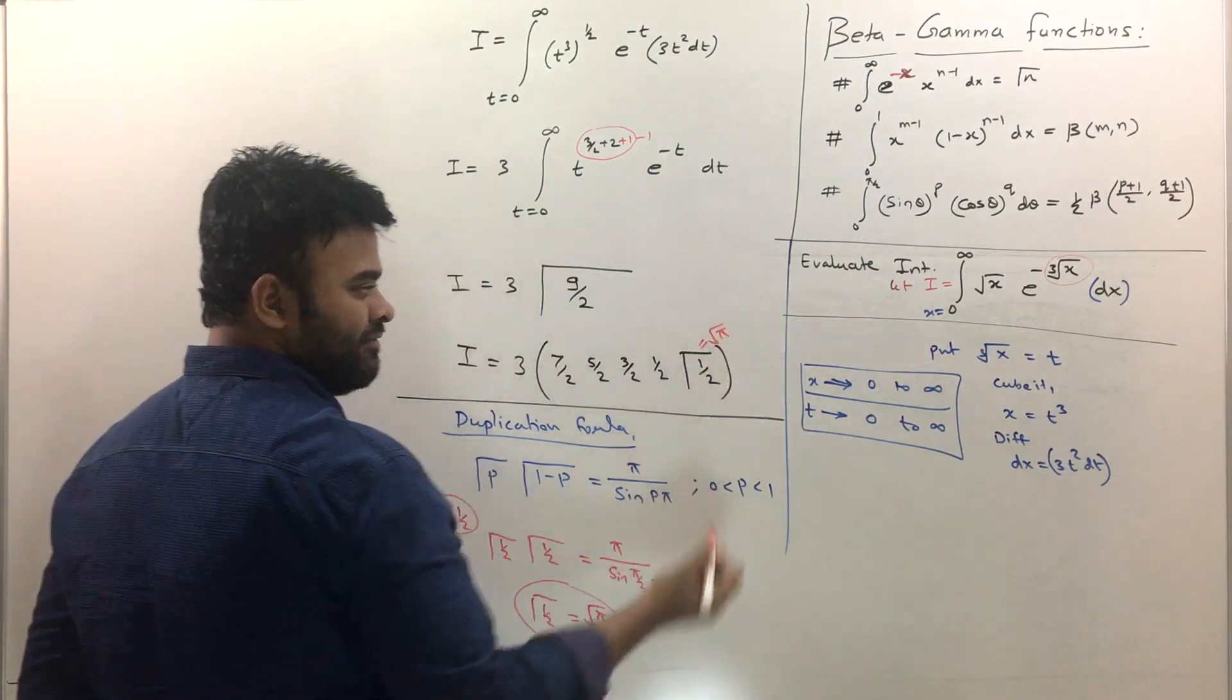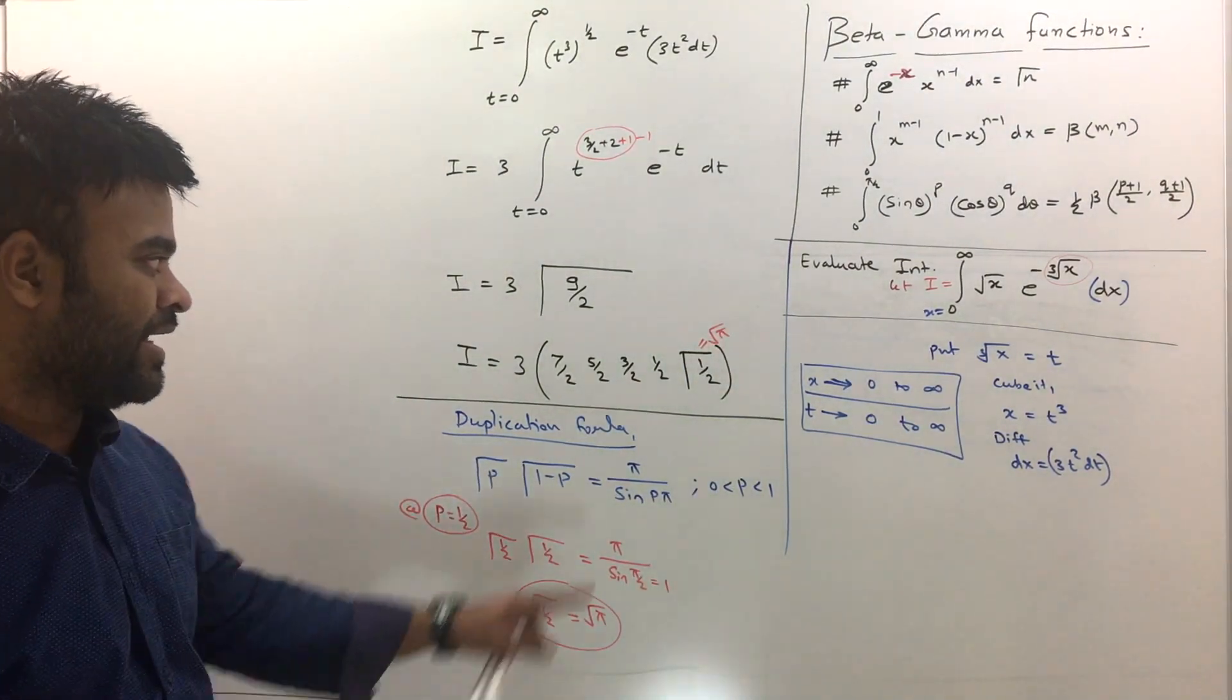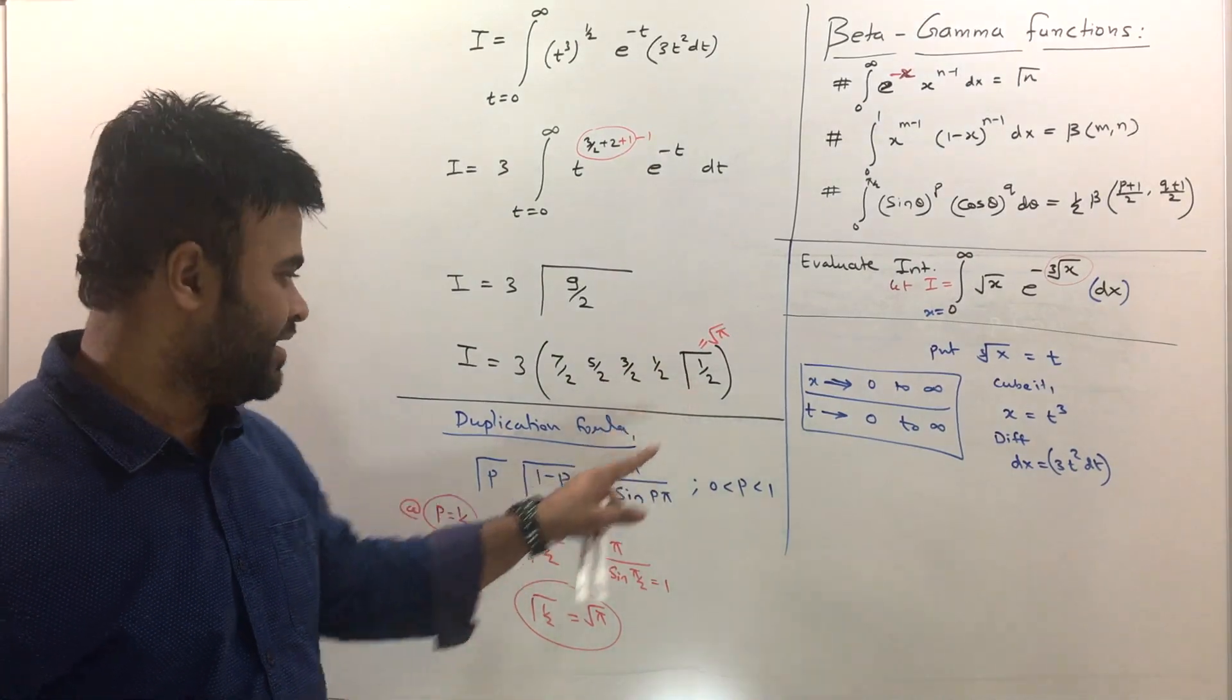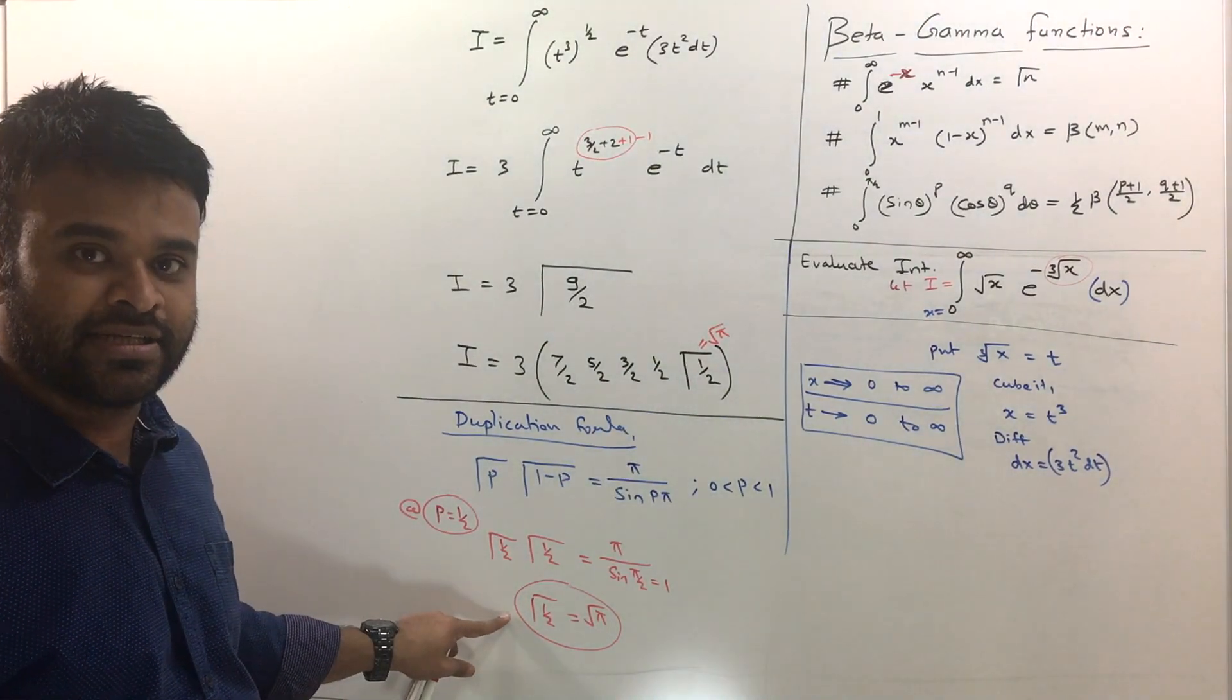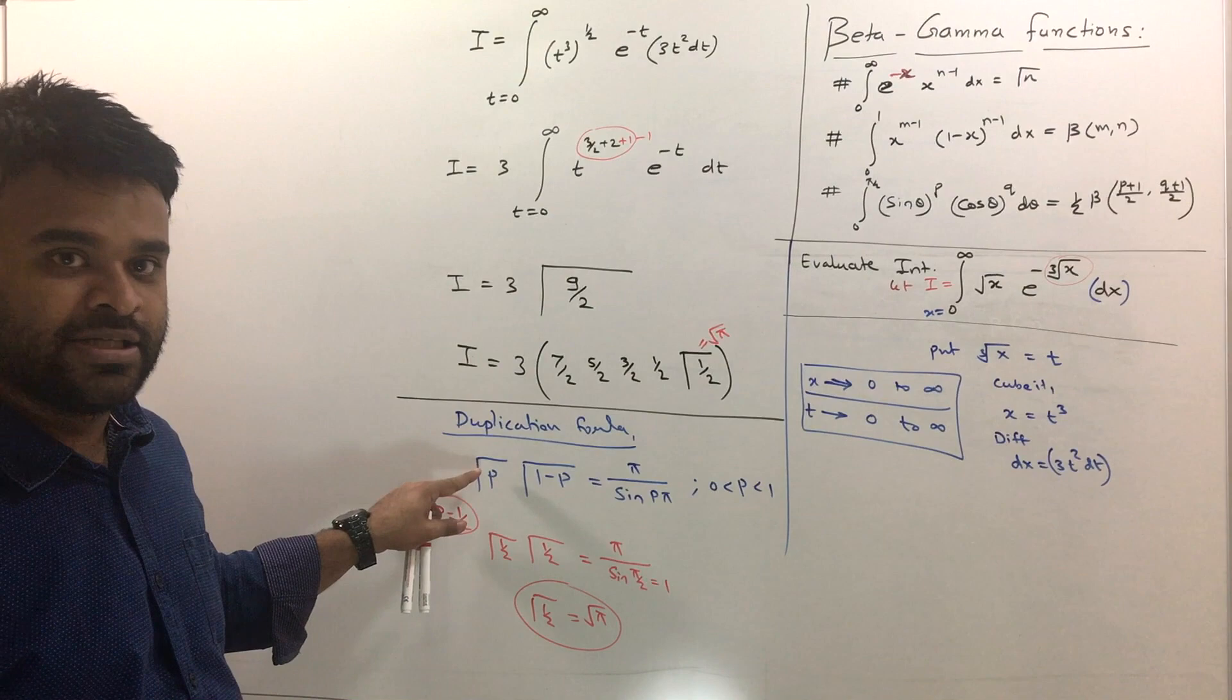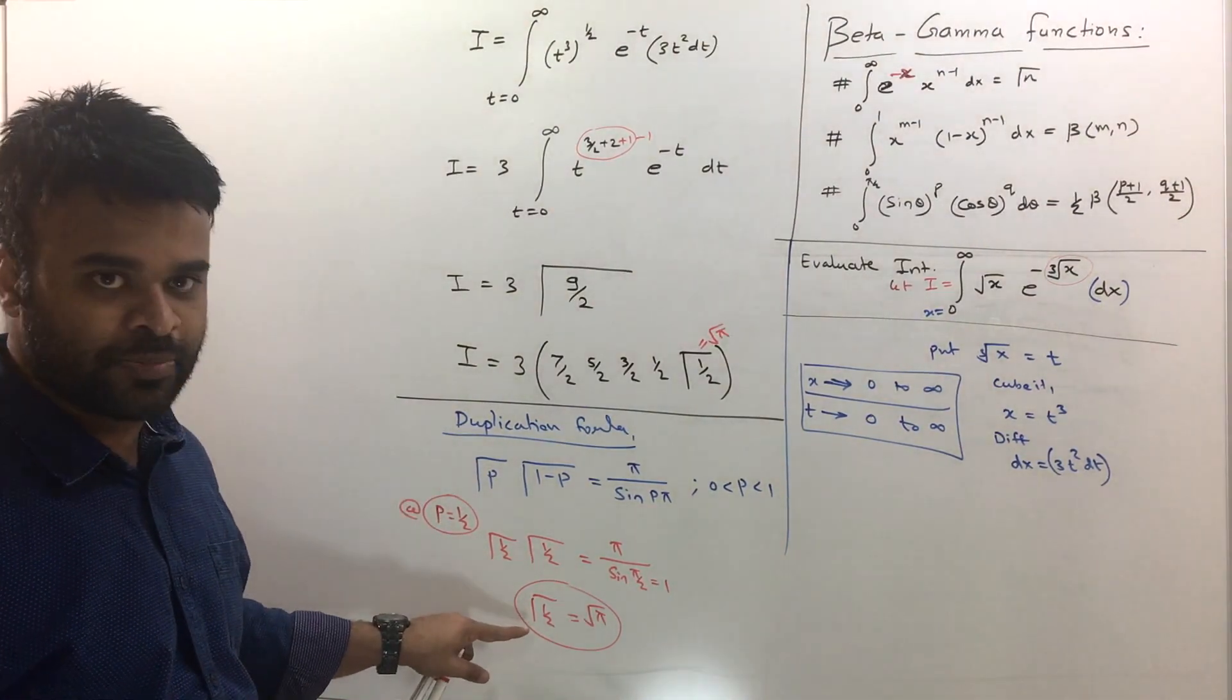I'll just write gamma half and I'll take a square root here is root pi. So gamma half is root pi. And you can use that value over here. And in exam, you should do that. Whenever you get gamma half, you should write down as root pi. That's the standard value of gamma half. And that can be obtained using this duplication formula. So remember duplication formula. Remember gamma half is equal to root pi. And see how we have solved this question.